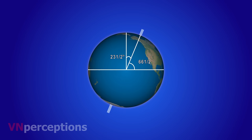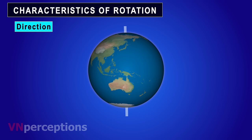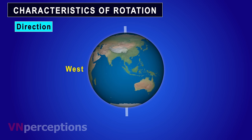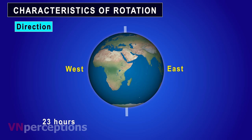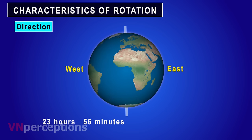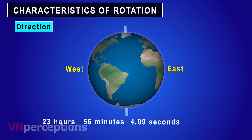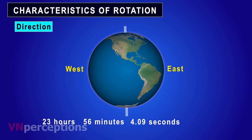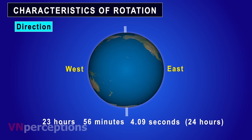Now let us understand the characteristics of rotation. The first one is direction. The earth completes one rotation from west to east on its axis in 23 hours, 56 minutes and 4.09 seconds, which roughly comes to 24 hours.